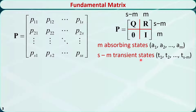We can rearrange the state transition matrix so the transient states come first at the top and the absorbing states at the bottom, like this. Matrix Q describes the transition probabilities between the transient states. Matrix R describes the transition probabilities from transient to absorbing states. The identity matrix I describes the transition probabilities between the absorbing states.